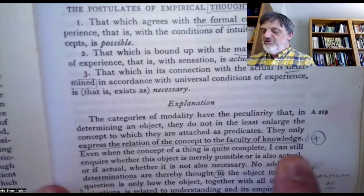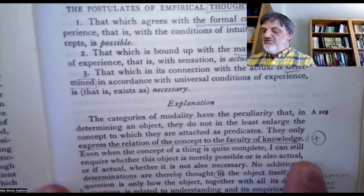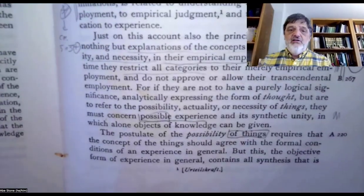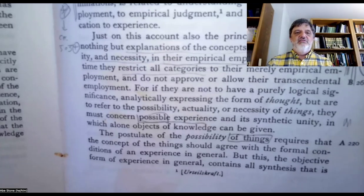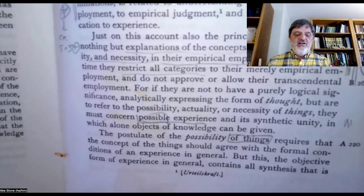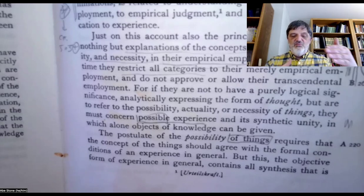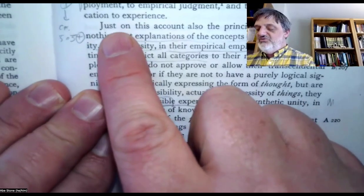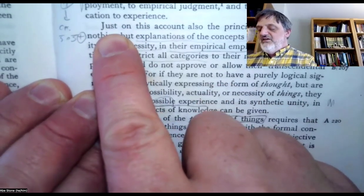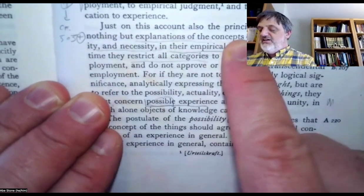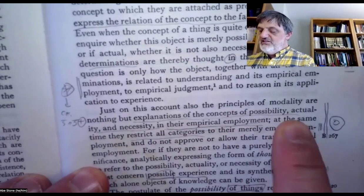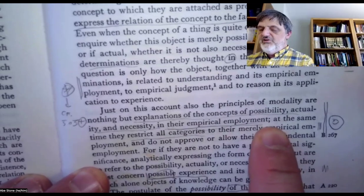Even when the concept of a thing is quite complete, I can still inquire whether this object is merely possible, or is also actual, or if actual, whether it is also necessary. They're not real determinations or predicates of the object. When I say something is possible or actual or necessary, I'm not adding to the description of the object, but adding something about its relationship to my faculty. The principles of modality are explanations of what possibility, actuality, and necessity mean in their empirical employment.